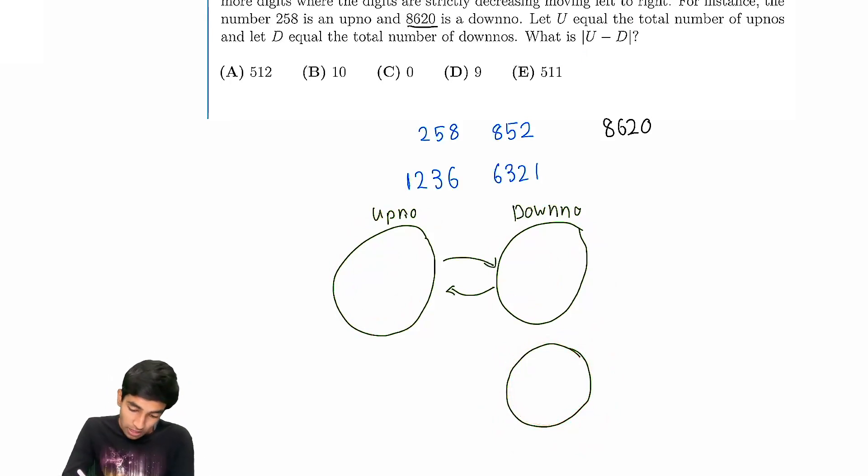How many downnos are going to be here? For example, first of all, what is this group going to be consisting of? Well, clearly you can see it has to end in a zero because if it ends in a zero, then when you flip it, then that doesn't count as an upno, because this is not a four digit upno.